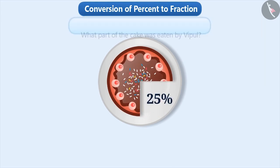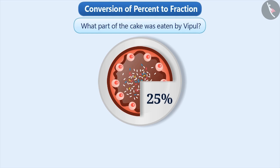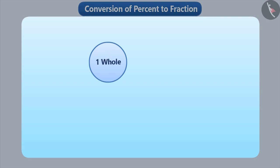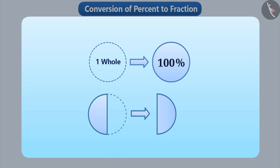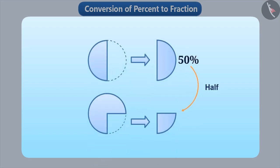Consider that 25% of the cake is eaten by Vipul. Then what part of the cake has he eaten? A complete part of a whole is 100%. Half of 100% is 50%. If we consider half of that half — that is 1 fourth part — it will be 50% of 50%, that is 25%. So 25% is equal to 1 by 4.